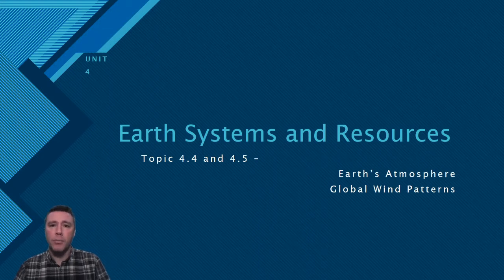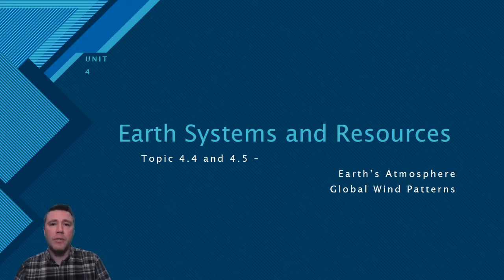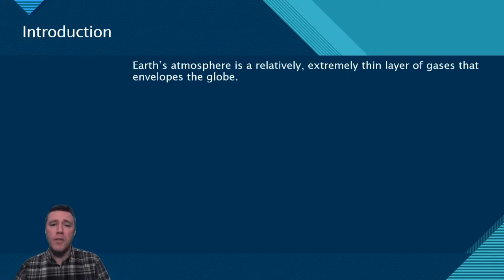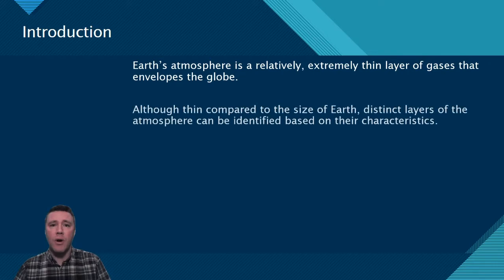In this video, we're going to explore topics 4.4 and 4.5, Earth's atmosphere and global wind patterns. Relative to the size of the Earth, the atmosphere is an extremely thin layer of gases that surround the entire planet. Earth's equatorial radius is 6,378 kilometers, yet most of the atmosphere's gases are found within 11 kilometers of the surface of Earth.